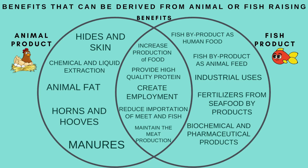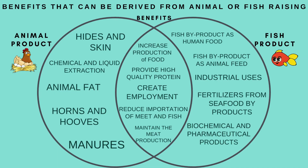The benefits derived from animal and fish raising are the following: 1. Increase production of food. 2. Provide high quality protein. 3. Create employment. 4. Reduce importation of meat and fish. 5. Maintain the meat production.